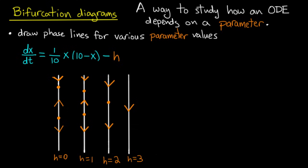Okay, I've taken away all the calculations. What we're left with is the beginning of a bifurcation diagram. I've drawn phase lines for various values of h, and we can see in those phase lines the bifurcation or the splitting of equilibria.